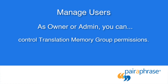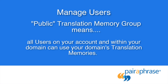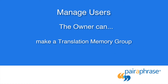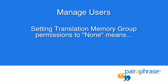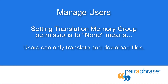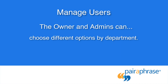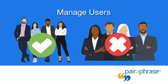You also have the flexibility to control translation memory group permissions. The default translation memory group setting is public, meaning all users on your account and within your domain can use your domain's translation memories. If you are the owner, you can make a translation memory group accessible to specific users. If you set it to none, you are bypassing the translation memory functionality, meaning no one in your organization can edit translations or create translation memories — users can only translate and download files. You can also choose different options by department. For example, you might allow your communications department to use translation memories, while your legal department may want to translate without using translation memory.